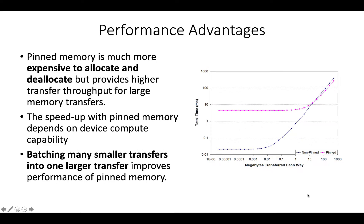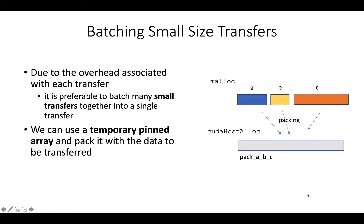So how much performance improvement can we get from host pinned memory? The answer is that it depends on how much data we are moving. Pinned memory is much more expensive to allocate and deallocate, but it provides higher transfer throughput for large memory transfers. Batching many small transfers into one large transfer improves the performance of pinned memory. Due to the overhead associated with each transfer and allocation of pinned memory, it is preferable to batch many small transfers together into a single transfer. This is done by using a temporary array and packing it with the data to be transferred.